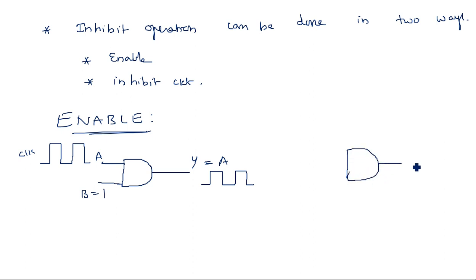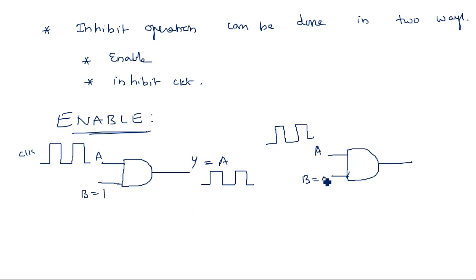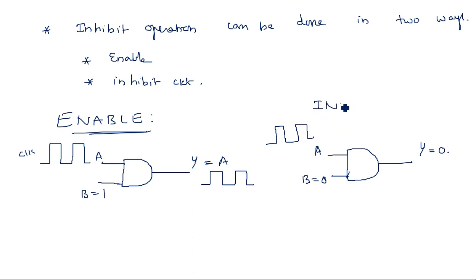Now consider the same AND gate with the other input fixed to zero — this is the inhibit case. When AND gate has one input fixed to zero, irrespective of the other input the output is always zero. Zero·zero = zero, one·zero = zero. There is no chance of getting one, so the complete output is zero.